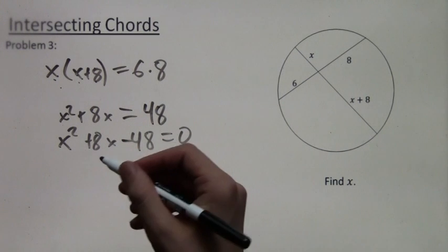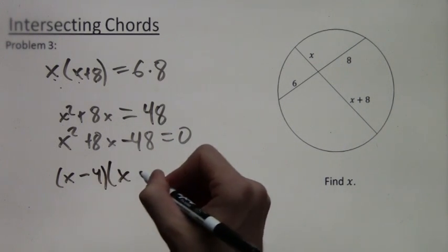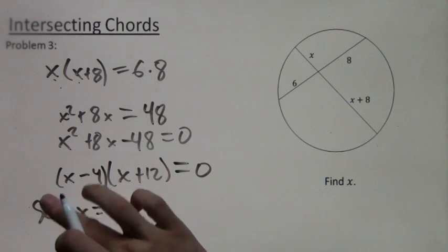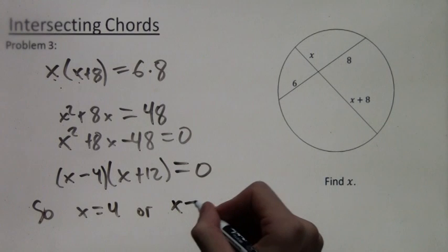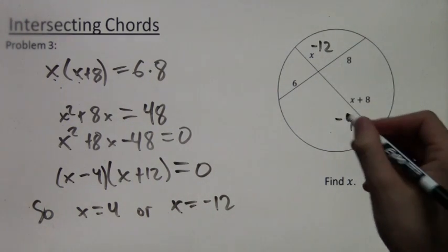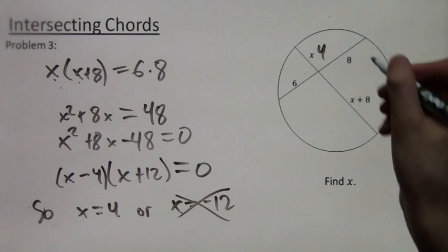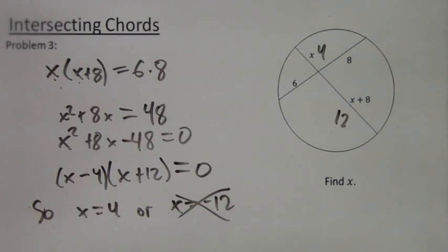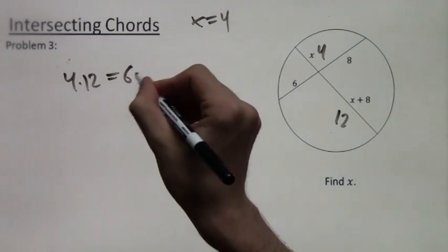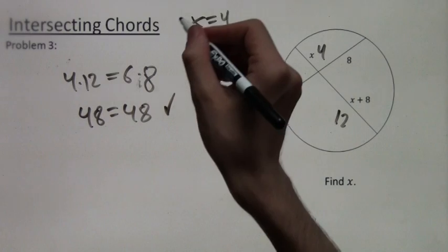The expression factors into (X minus 4)(X plus 12) equals 0. That gives us two options: X equals 4 or X equals negative 12. X equals negative 12 doesn't work because plugging it in gives negative lengths, and length cannot be negative. So we pick X equals 4, giving lengths of 4 and 12 for that chord. Checking: 4 times 12 equals 6 times 8, which is 48 equals 48. X equals 4 is the right answer.